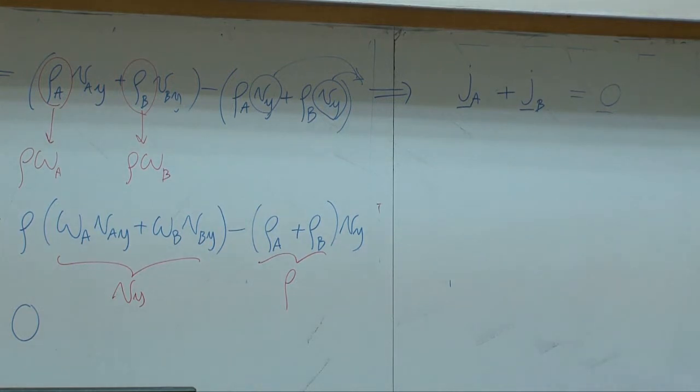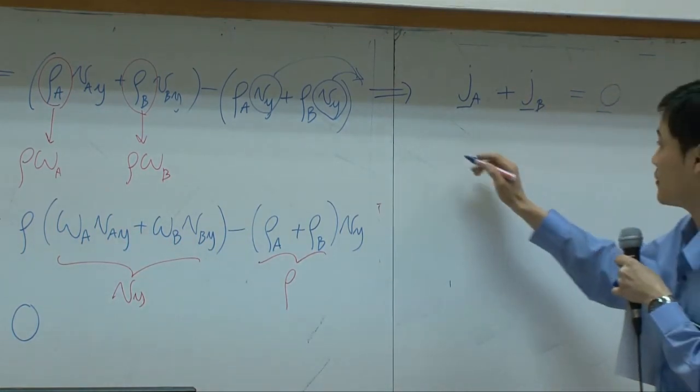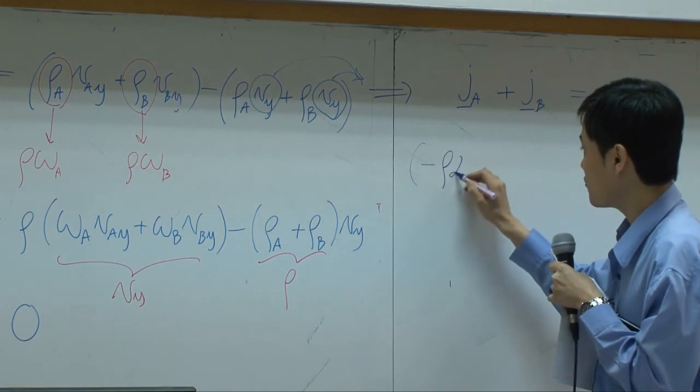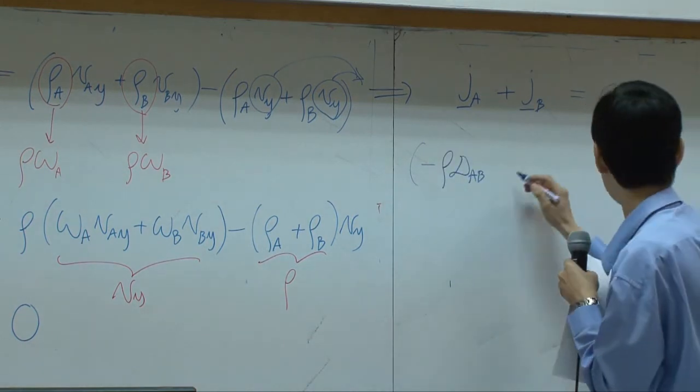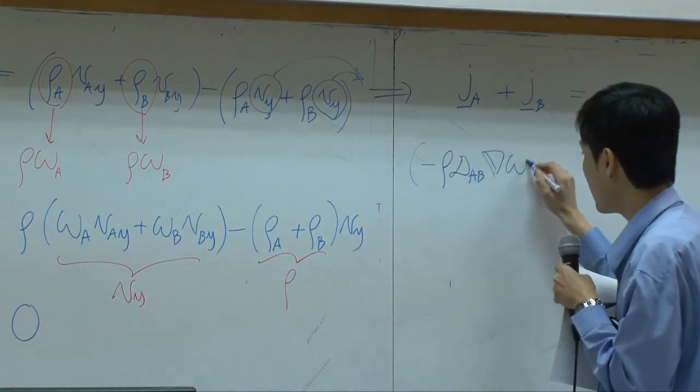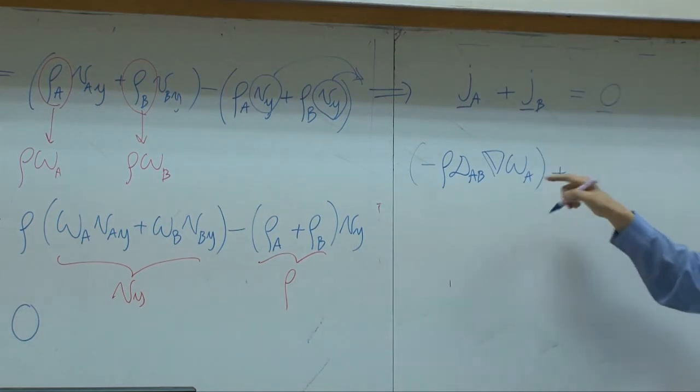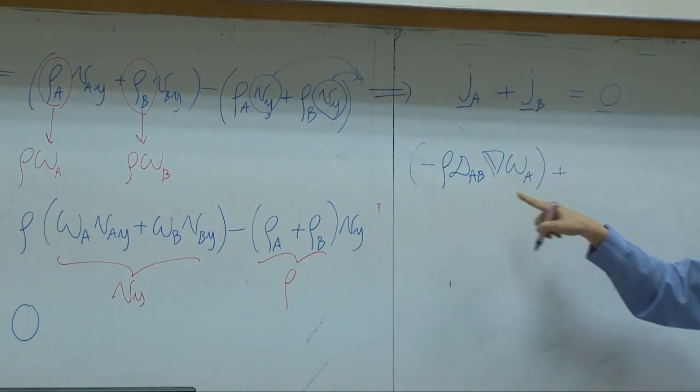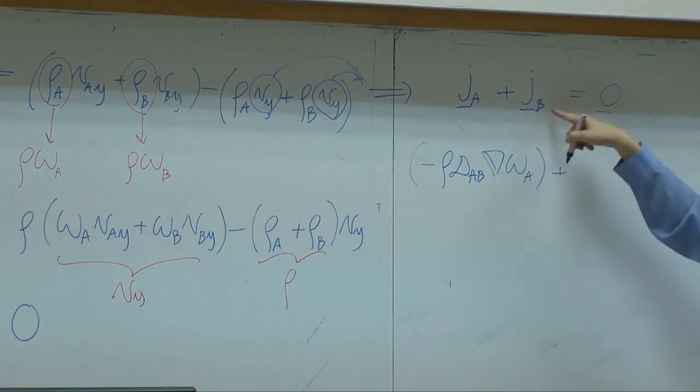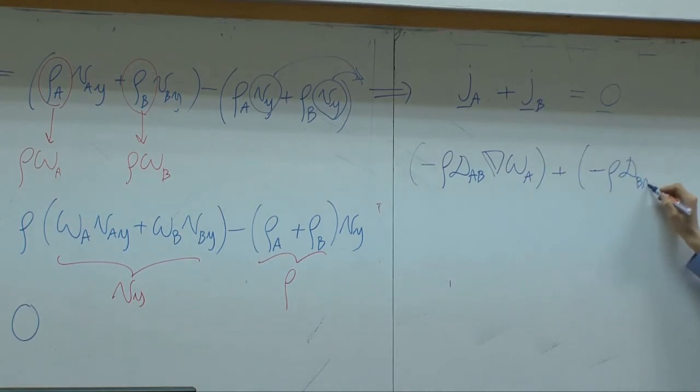Now, if I use Fick's law to put it in here, this is binary. So if I transfer Fick's law in here, you get minus rho D A B del omega A. This is J A. If you write Fick's law for J A B, supposed to be minus rho D B A, not A B. Del omega B equal to zero.